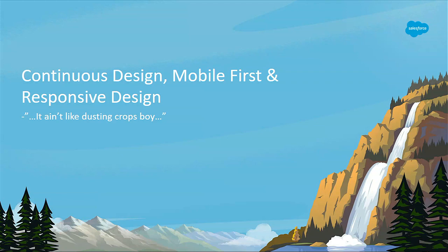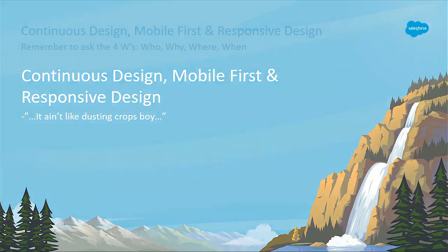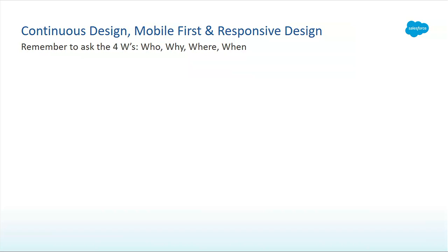I wanted to start this session reviewing some of the terminology that we hear out there when we talk about UI design. One term that we hear often is continuous design. Another one is mobile first, and another one is responsive design. So what do they mean, really?